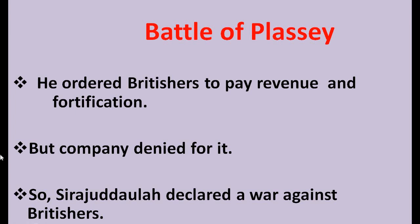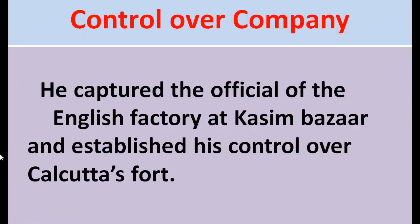The company denied his demands, which angered Sirajuddaula and he declared war against the British. After negotiations failed, the Nawab Sirajuddaula marched with 30,000 soldiers and attacked the English factory at Kasim Bazar. He captured all company officials, locked the warehouse, disarmed all Englishmen, and blockaded English ships.